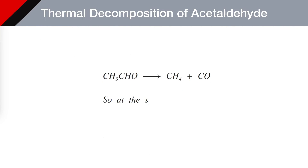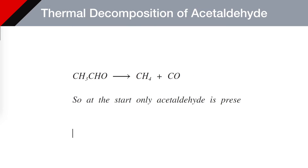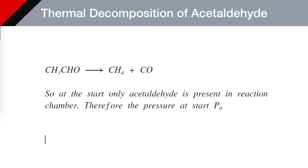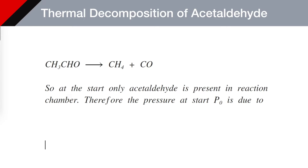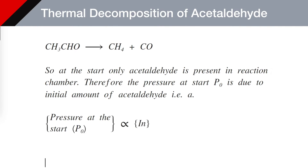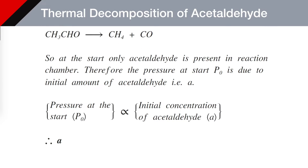At the start, only acetaldehyde is present in the reaction chamber. Therefore the pressure at start, P₀, is due to the initial amount of acetaldehyde, A. So pressure at the start P₀ is proportional to initial concentration of acetaldehyde A. Therefore we can write A is proportional to P₀. This is equation number 1.